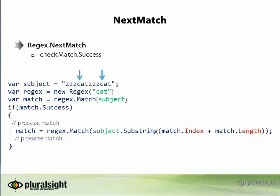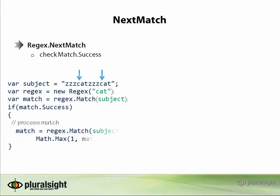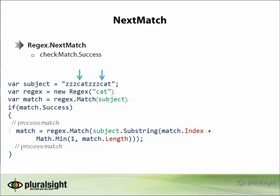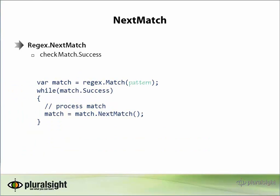In our code snippet here, if we found an empty match, it would be an infinite loop because the length of an empty match is zero, unless we made sure that the length was never less than one. By using regex next match, we can iterate through all the matches a regular expression finds with just a simple loop.